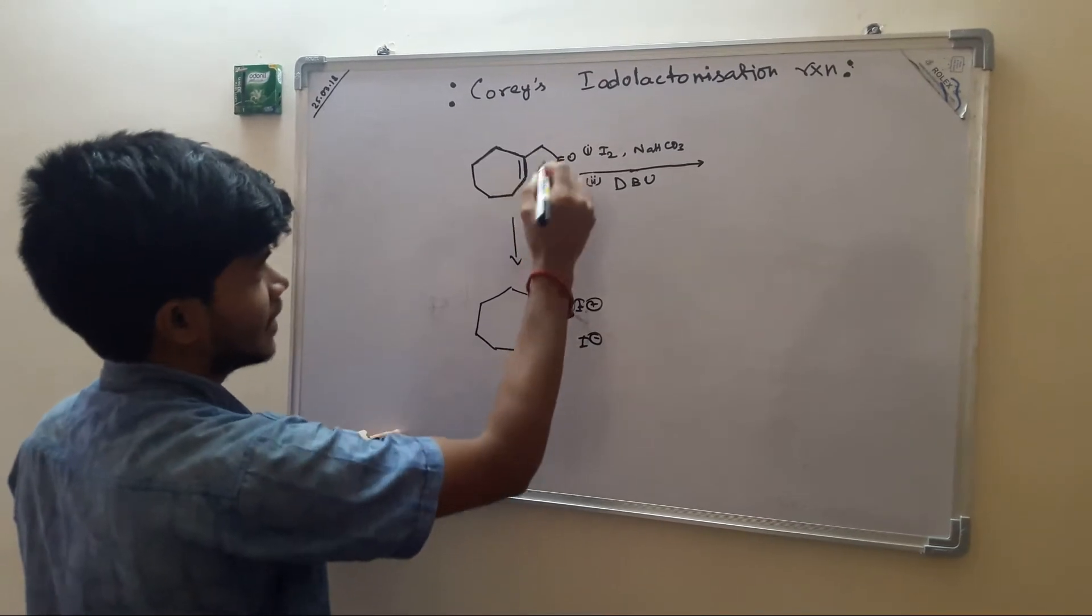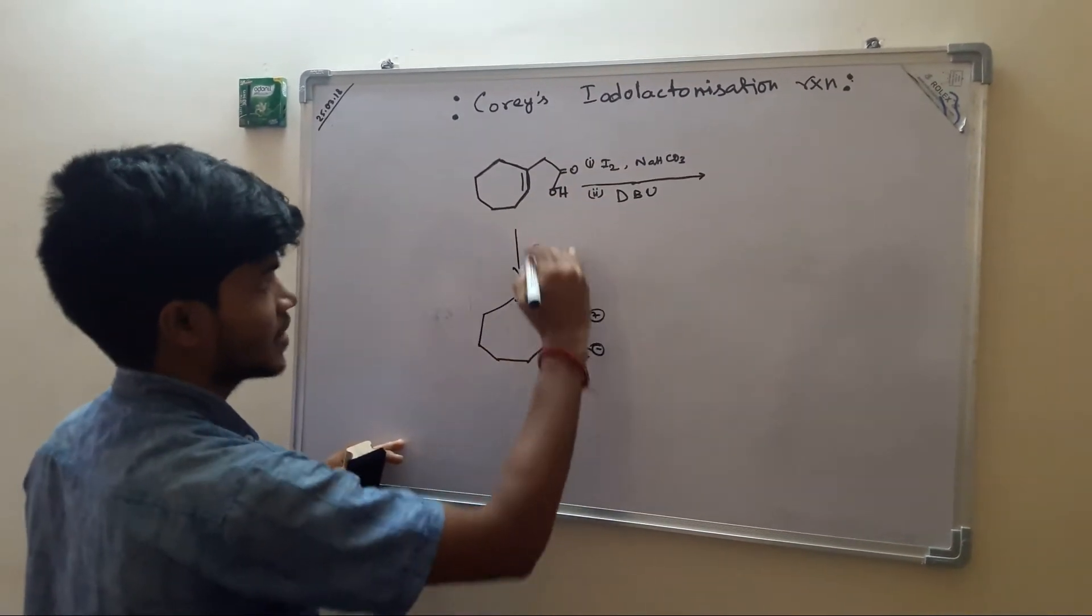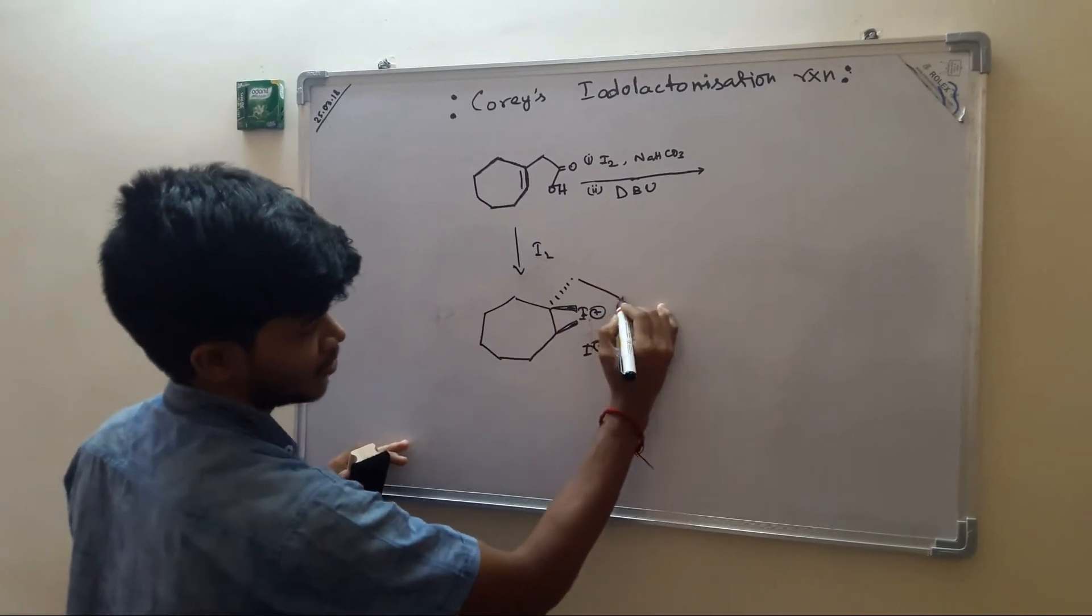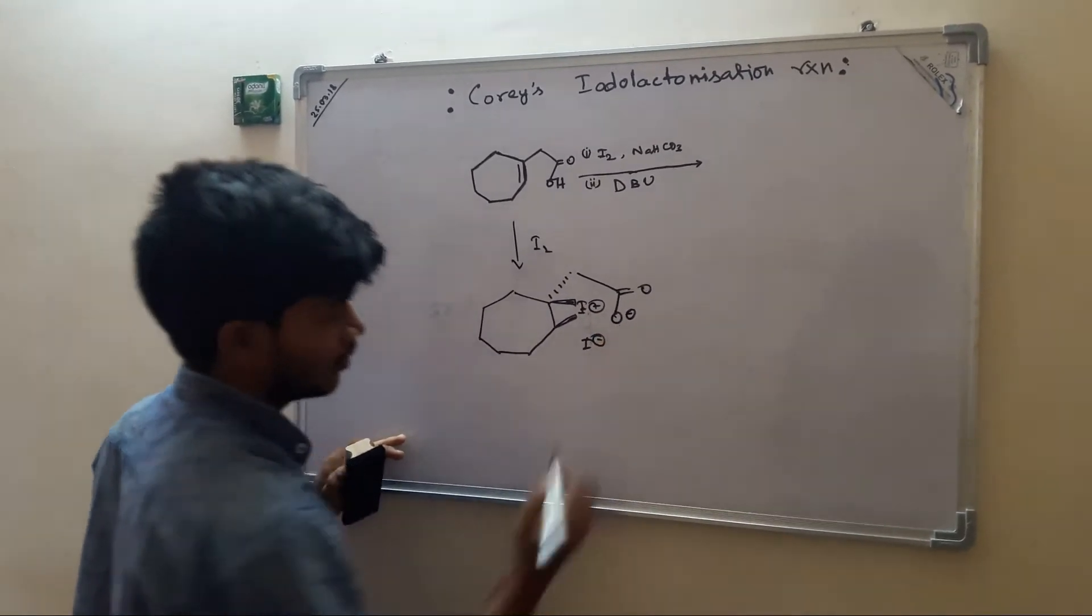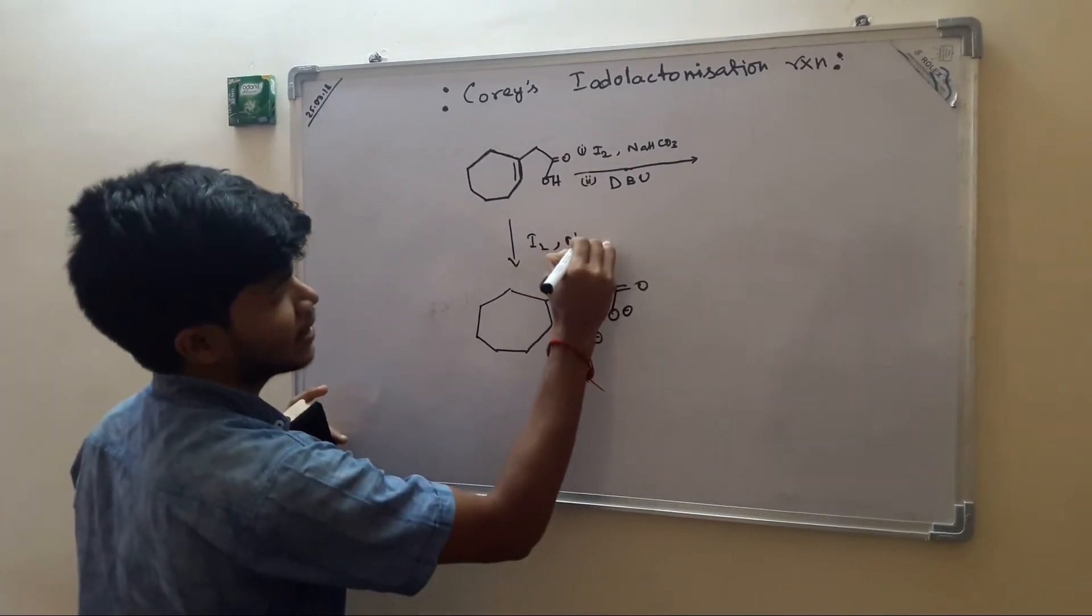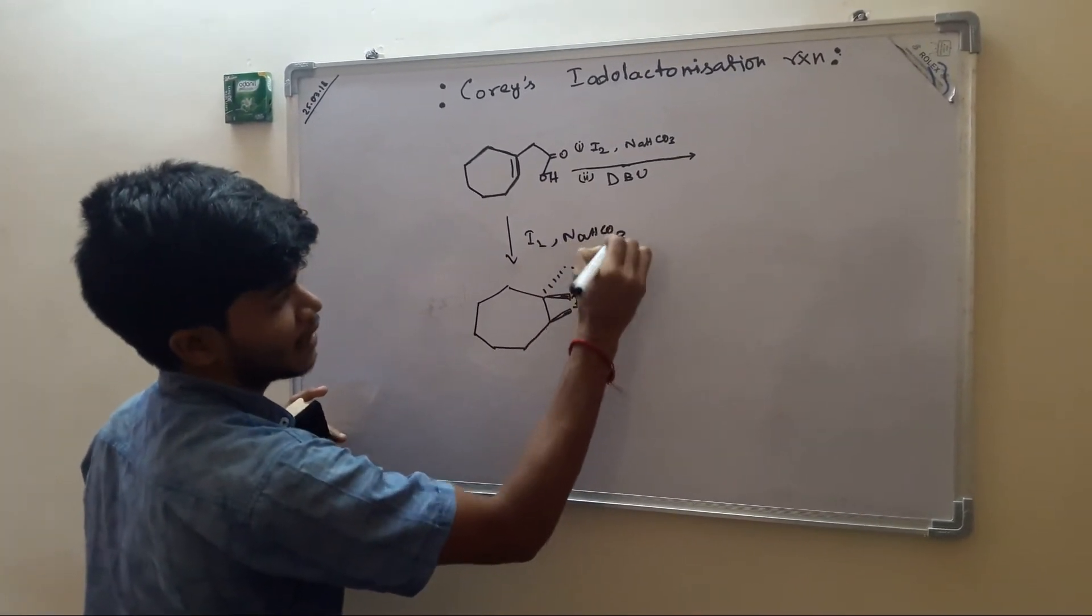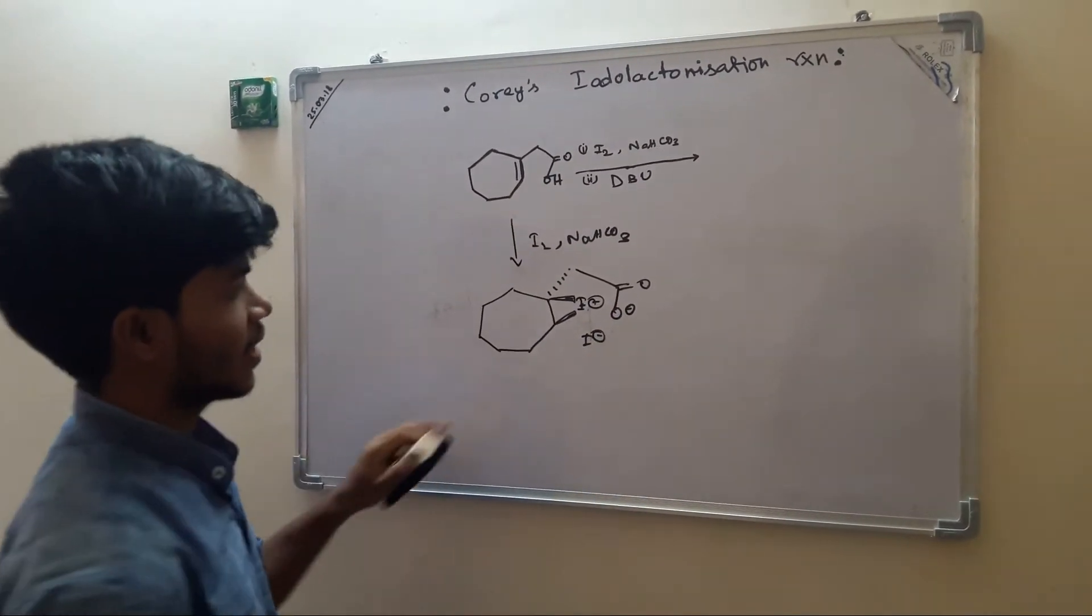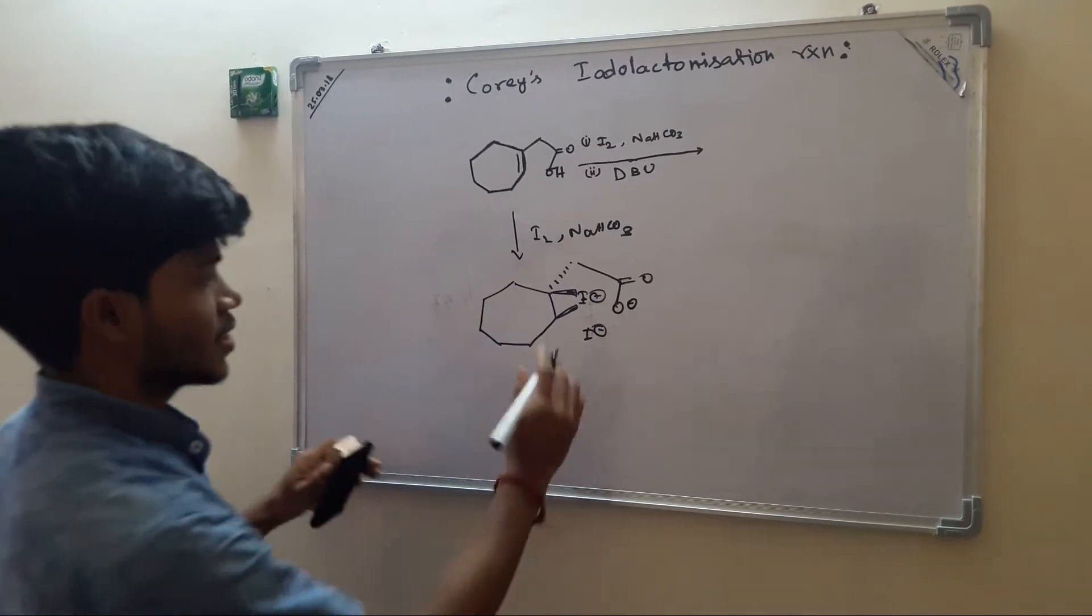There is an intramolecular acid group present. So as iodonium ion is formed, this will be in below. As we do the reaction in basic medium, the acid will be acetate anion, carboxylate anion. Now there are two competitive nucleophiles: one is iodide and one is carboxylate anion.